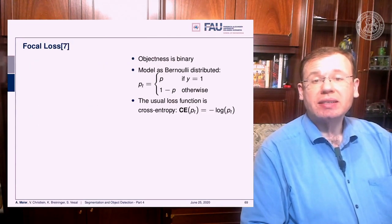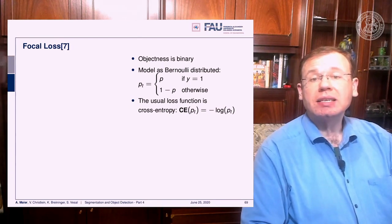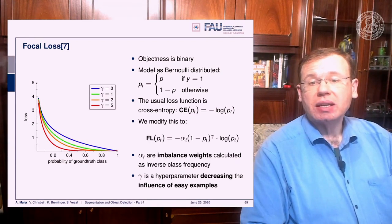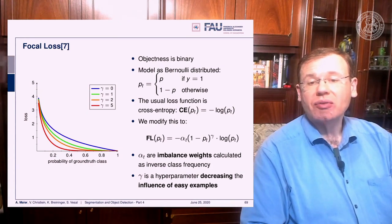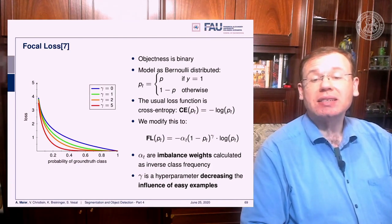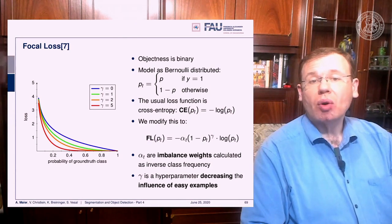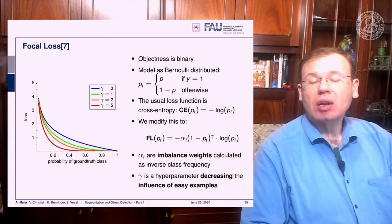We can define the objectness — whether it's an object or not — as binary, and model this as a Bernoulli distribution. The usual loss is simply the cross entropy: minus the logarithm of the predicted class. We adjust this to the focal loss by introducing an additional parameter alpha, which is the imbalance weight calculated as the inverse class frequency. Additionally, we introduce gamma, a hyperparameter. This allows decreasing the influence of easy examples. As shown in the plot, increasing gamma makes the respective weight more peaked, so you concentrate on classes that are not very frequent.